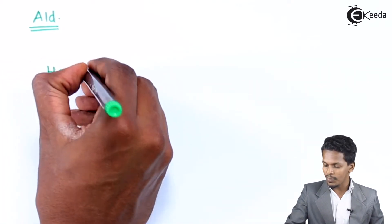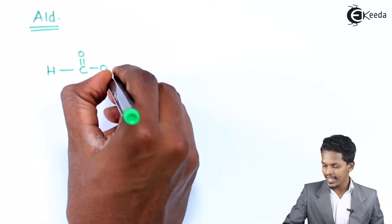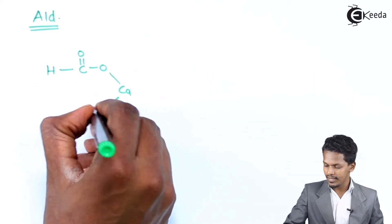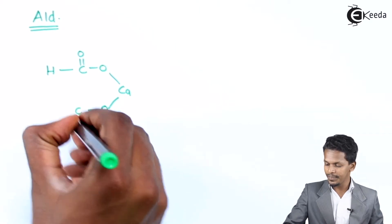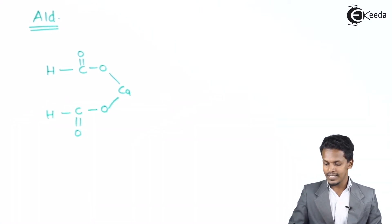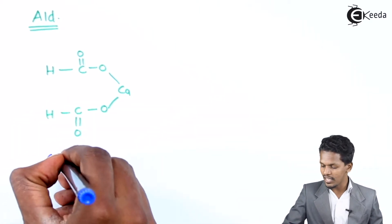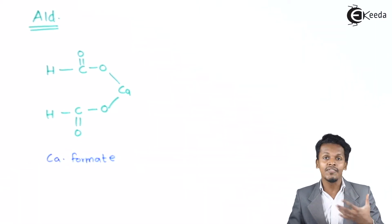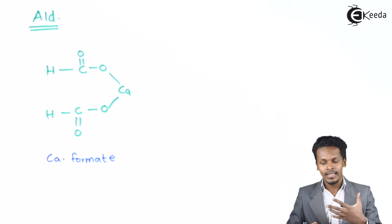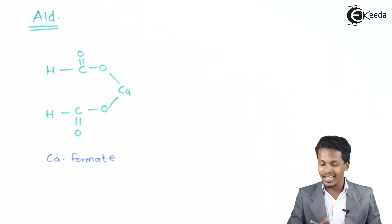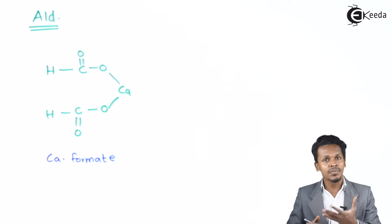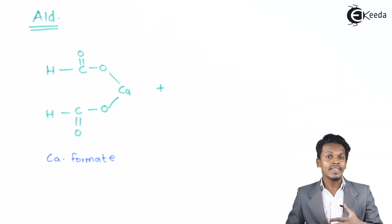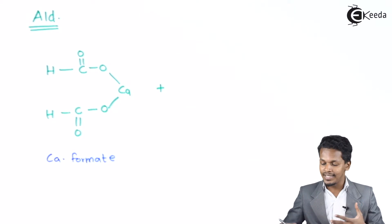This is calcium formate — its structure is represented in this way. The name is derived because it is derived from formic acid, and that is the reason the name is calcium formate. It is the calcium salt of formic acid. This can be reacted with another calcium carboxylate, where this H would be replaced by the R group or alkyl group.